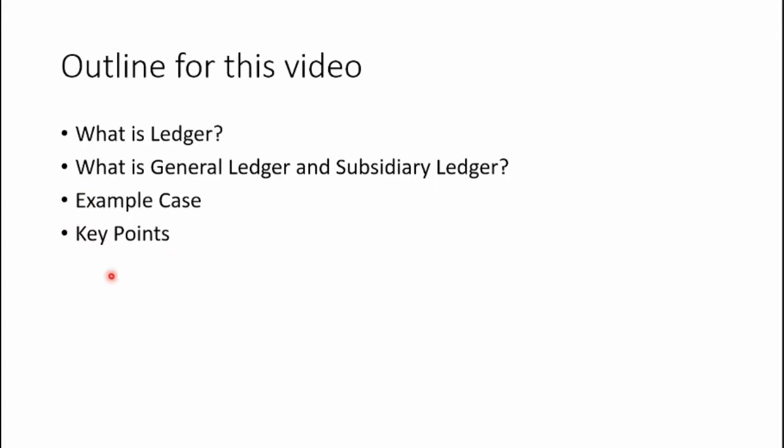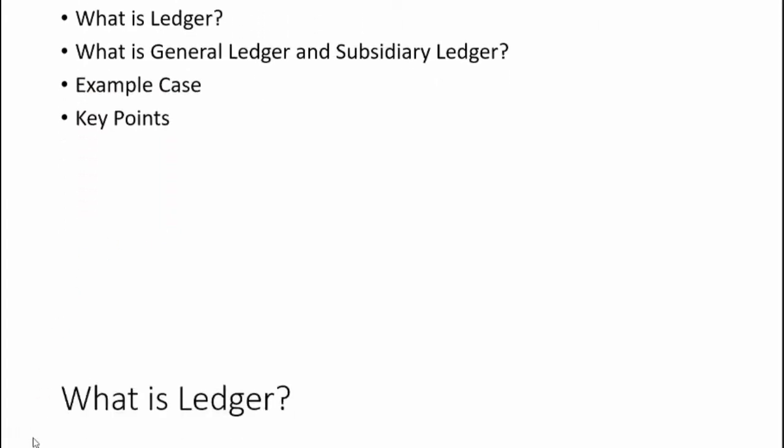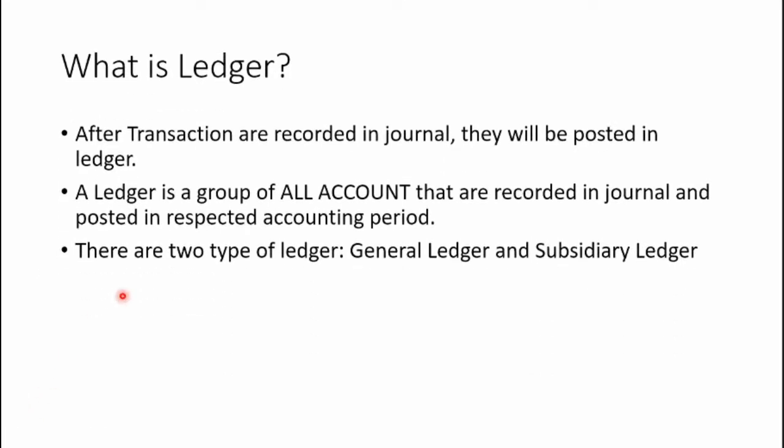So what is a ledger? After transactions are recorded in a journal, they will be posted in a ledger. Ledger is a group of all accounts that are recorded in the journal and posted in the respective accounting period. So a ledger is like a compilation of all journal entries in the accounting period.